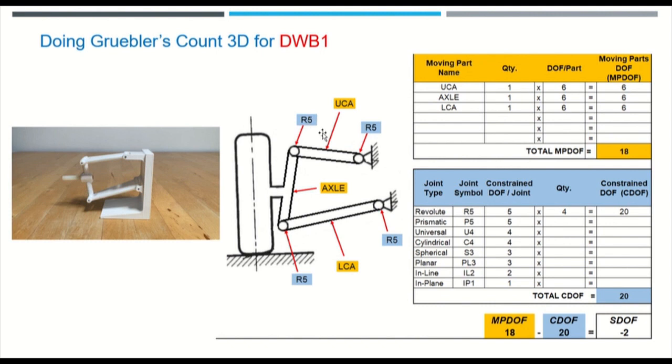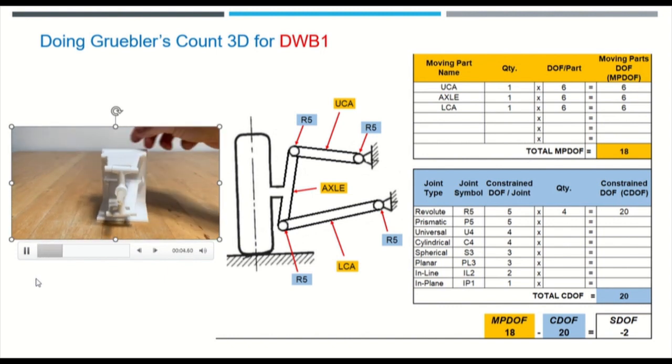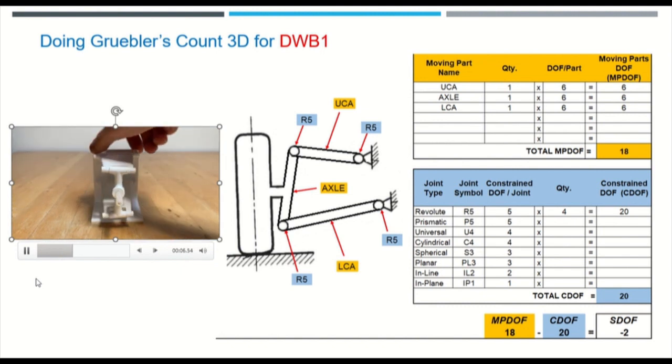And these three add up to a moving parts degree of freedom of 18. And with four revolute joints, we get a constrained degrees of freedom of 20. So 18 subtract 20 is negative two. Negative two means it's a lock situation. Parts are under stress and things wear over time.